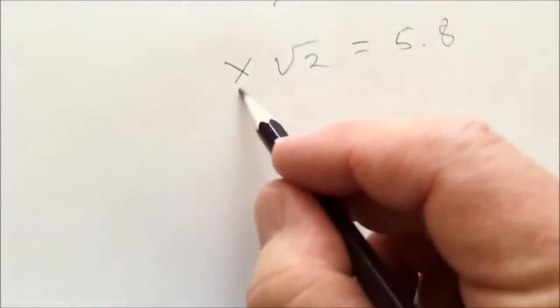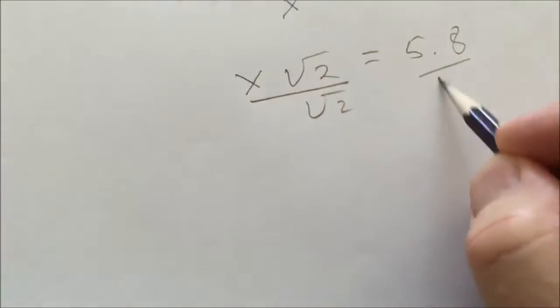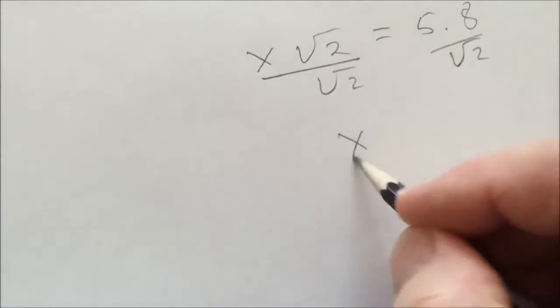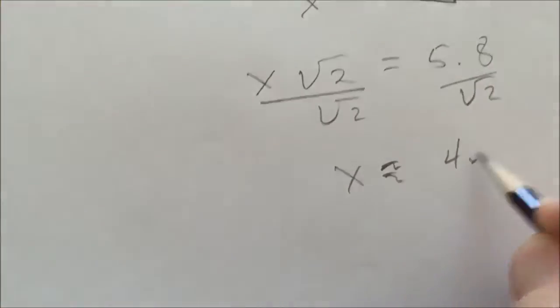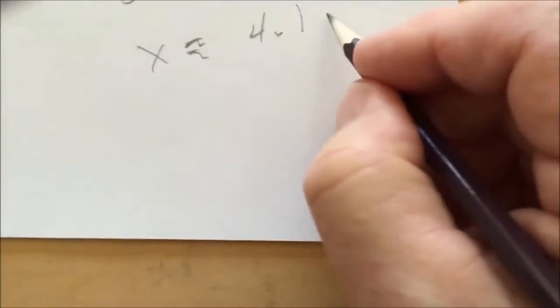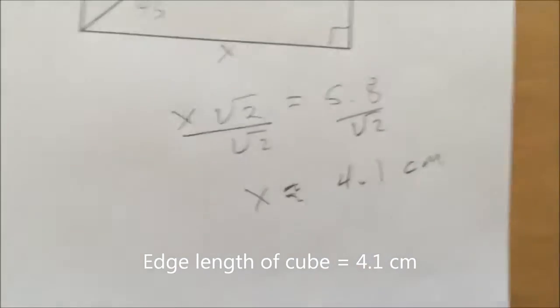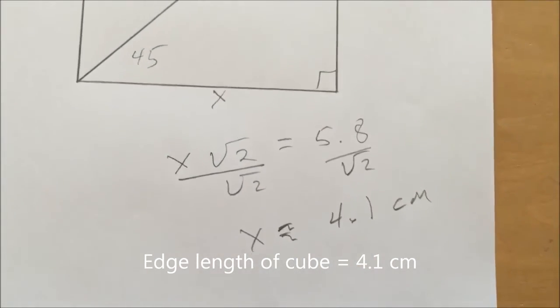Solving this equation for the edge length of the cube, we get x is approximately equal to 4.1 cm. So the edge length of the cube will be 4.1 cm.